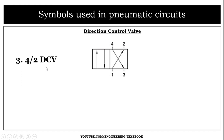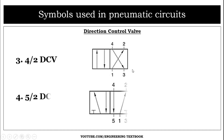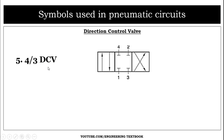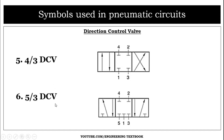The four-by-two DCV has four ports — two inlet and two outlet — with two positions. The four-by-three DCV has four ports with three positions. The five-by-two DCV has five ports and two positions. The five-by-three DCV has five ports and three positions, where three ports are inlets and two ports are outlets.